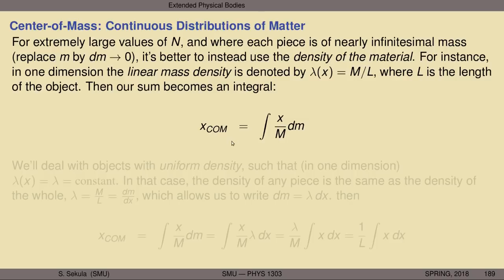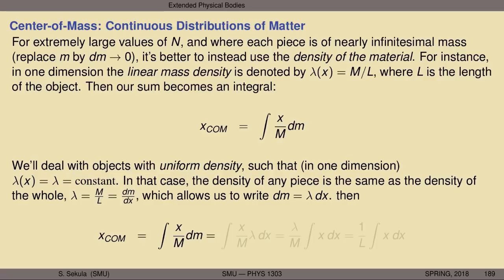In this case, our sum becomes an integral. The location in x of the center of mass is the integral over all little bits of mass dm of x over M. In a class like this, it's fairly common to deal with objects of uniform density. In one dimension, that means lambda is a constant: the amount of matter per unit length is not changing regardless of how much length you look at. Whether I take the mass in one atom and divide by the length of that atom, or take the whole mass and divide by the whole length, I get the same value for lambda — lambda is a constant independent of the size scale.